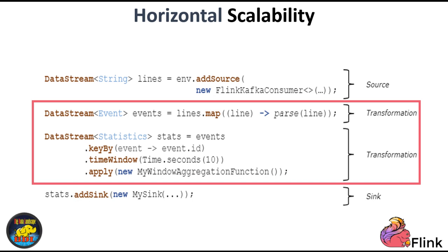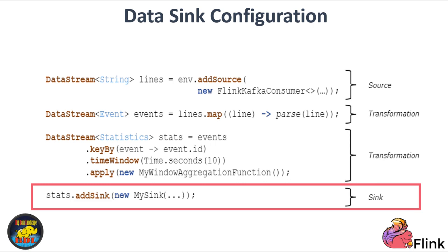After applying transformations to the Datastream, you define one or more sinks to determine what happens to the results of your computations. For instance, you can write the processed data to a database to materialize the current state as a final result. Alternatively, you can choose to continue treating the data as a stream and write all updates to a message broker for further downstream processing.